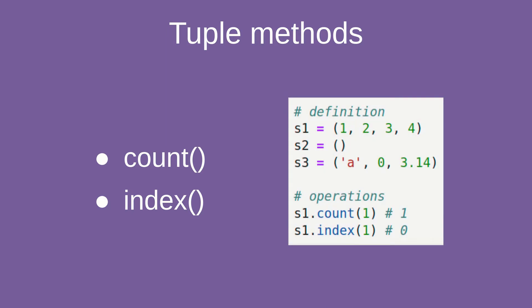To demonstrate this, we have tuple s1 with values 1, 2, 3, and 4. Applying method count with argument 1 is going to return 1 because we have value 1 only once in this tuple. Using method index with 1 is going to return 0, which is the position of this value in the tuple. Pause the video and guess what the answers will be for s2 and s3 — you can share the answers in the comment section.